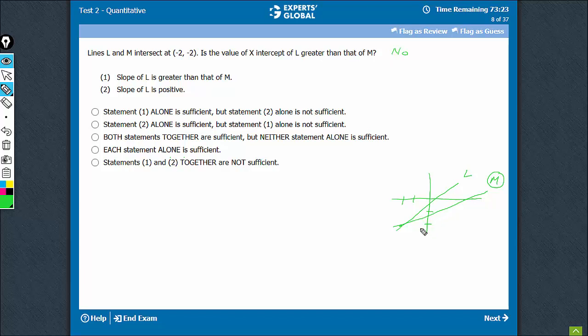However, in the case where L has a positive slope and M has a negative slope, something like this, if M were a declining line, now in this case the x-intercept of M would be something negative. So in this case, the answer would become yes.